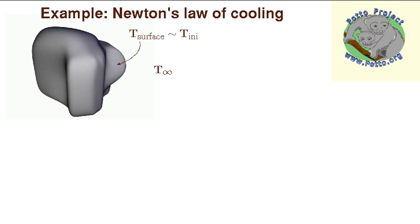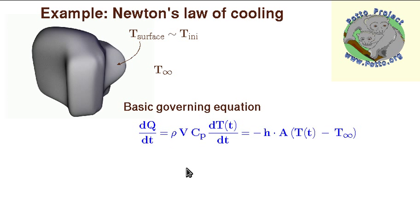The best way to explain how the Mussel method works is by example. If we look at Newton's Law of Cooling, here is a body that I drew showing that it is in uniform temperature, where the surface temperature is about the same as the temperature inside the body, and it is immersed in a fluid with T-infinity, meaning the surrounding temperature. The basic governing equation will be used to find the dimensionless group.